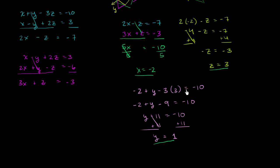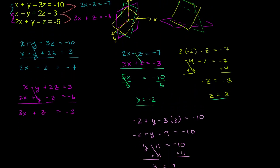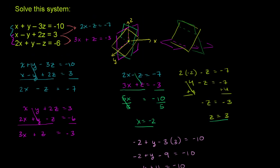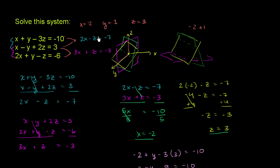Let's go back and verify that x = -2, y = 1, z = 3 works for all three constraints. In the first equation: -2 + 1 - 3(3) = -2 + 1 - 9 = -10. That checks out. In the second equation: -2 - 1 + 2(3) = -3 + 6 = 3. That satisfies the second equation. In the third equation: 2(-2) + 1 - 3 = -4 + 1 - 3 = -6. It satisfies all three equations, so we can feel pretty good about our answer.